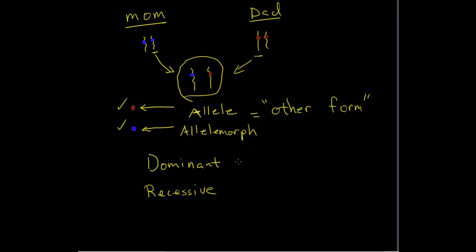So for here, our brown eyes, we're going to give it a capital B. Alright, capital B because it's stronger and B standing for brown. And then recessive, we're going to give that a lowercase b.